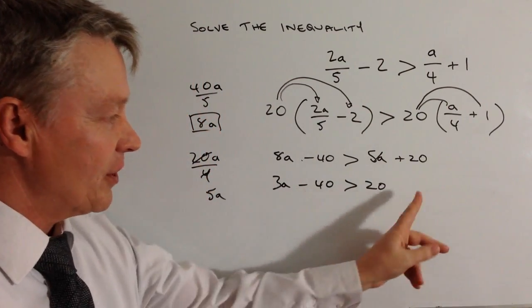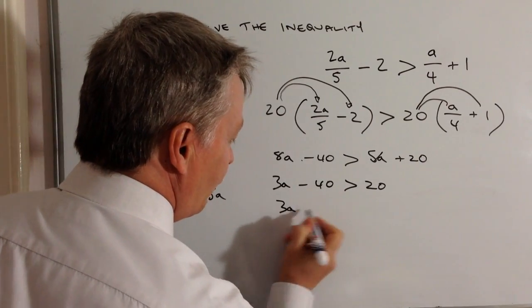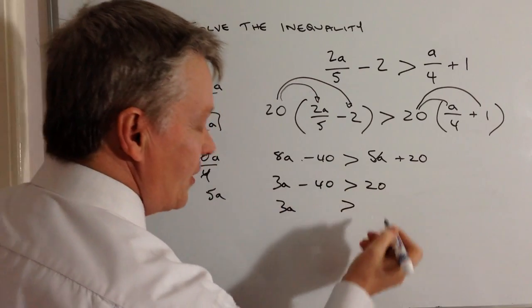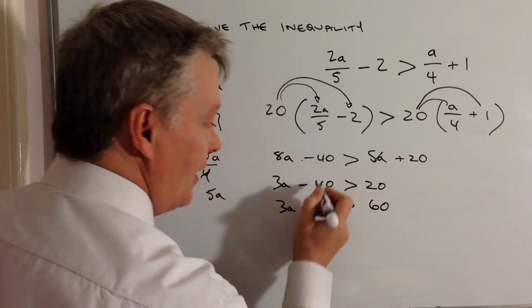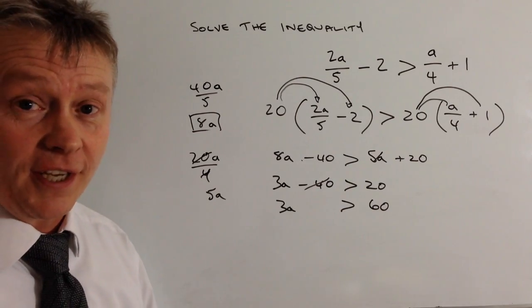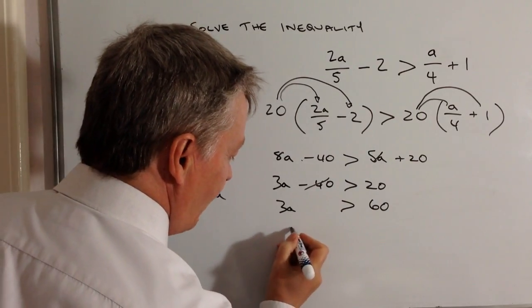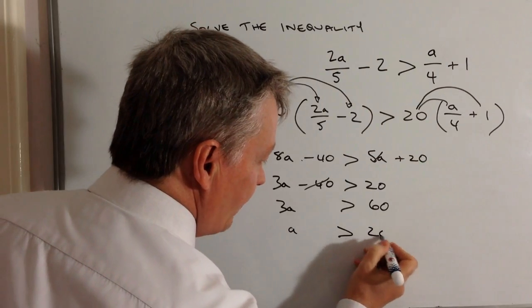Then I need to move the 40, so I'll add 40 to both sides. I get 3a > 20 + 40, which is 3a > 60. Then I divide through by 3, which gives a > 20.